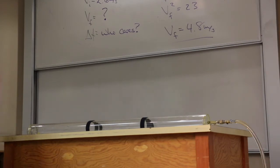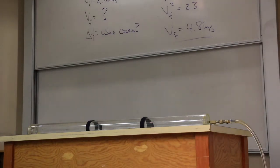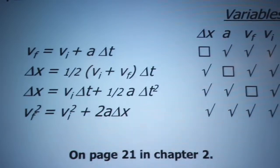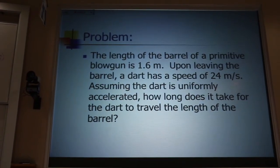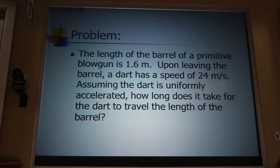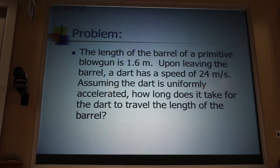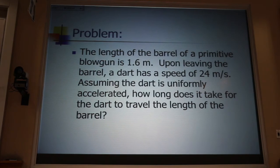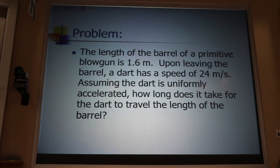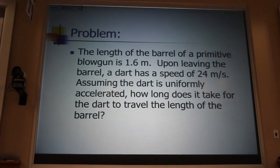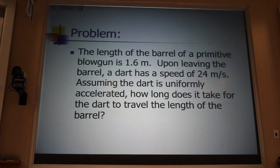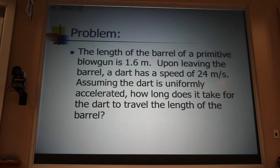Okay. Let's try another one. And this time I'll give you enough time to solve it yourself. The length of the barrel of a primitive blowgun is 1.6 meters. Upon leaving the barrel, a dart has a speed of 24 meters per second, assuming the dart is uniformly accelerated, meaning we can use these kinematic equations. How long, how many seconds on your Mickey does it take for the dart to travel through the length of the barrel? So, with your neighbor, go through that recipe.